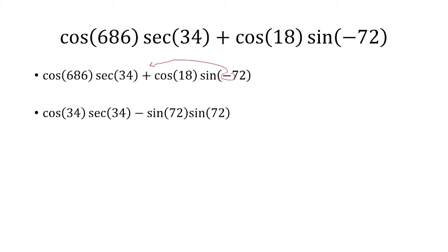And we said that cosine and secant are reciprocal, so that's going to cancel and we'll be left with 1. And here we just have sine times sine. It's the same angle, so you could just square it.